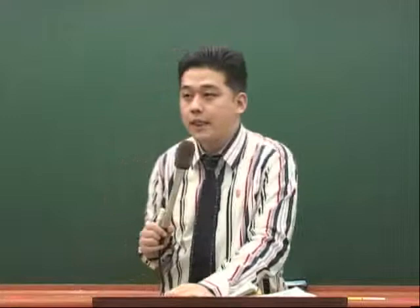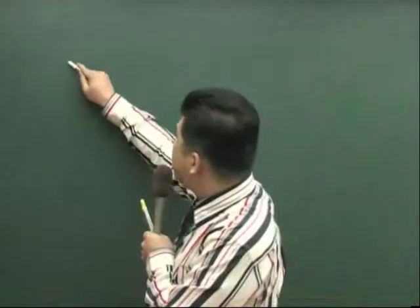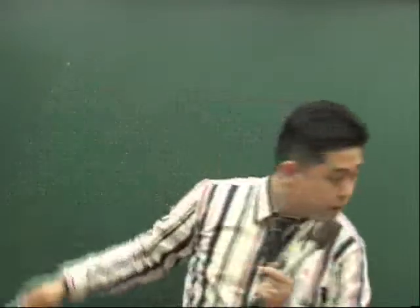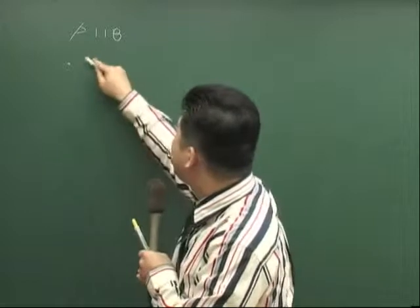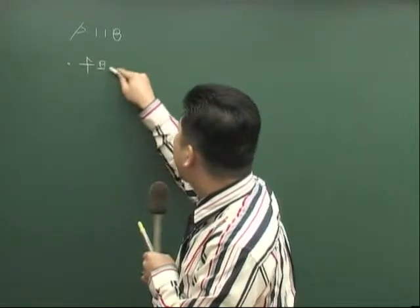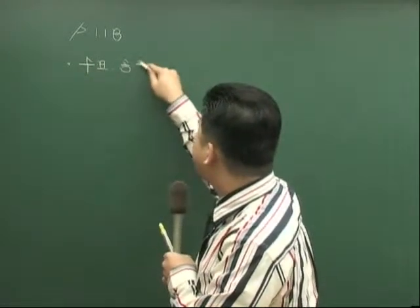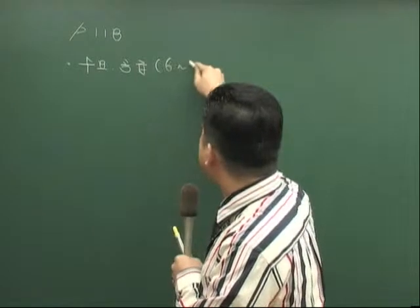자 그러면 마지막 시간 118쪽에 부동산경제론 첫번째 1절에 있는 수요공급이론으로 가도록 하겠습니다. 수요공급이론 어떻게 접근해야 되고 어떤 방법으로 공부해야 되는지에 대해서 한번 얘기를 드려보도록 합시다. 교재 페이지는 118쪽입니다.